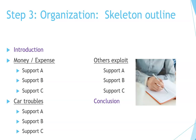Step three in the process is organization. This person chose to use a skeleton outline: introduction, then the first point — money or expenses; the second point — car troubles; the third point — others often exploit or take advantage of you when you have a car; and then the conclusion at the end. This is the outline of ideas the student is going to write about.